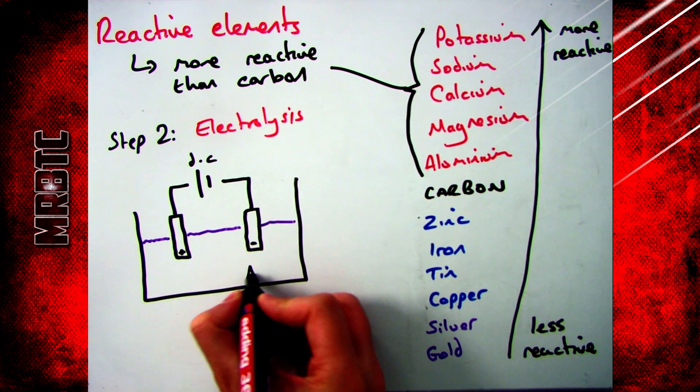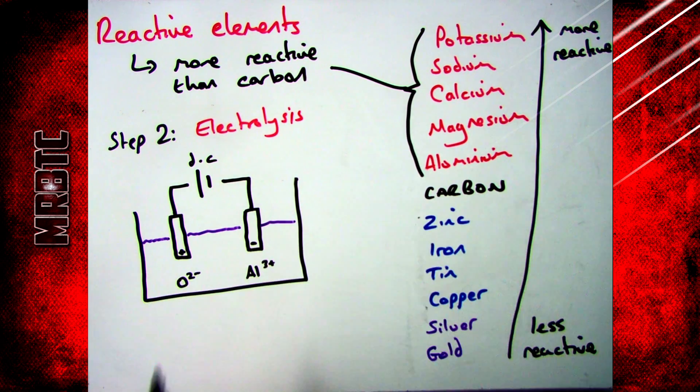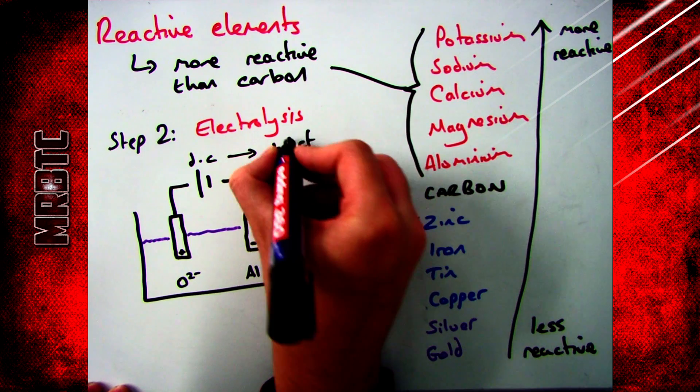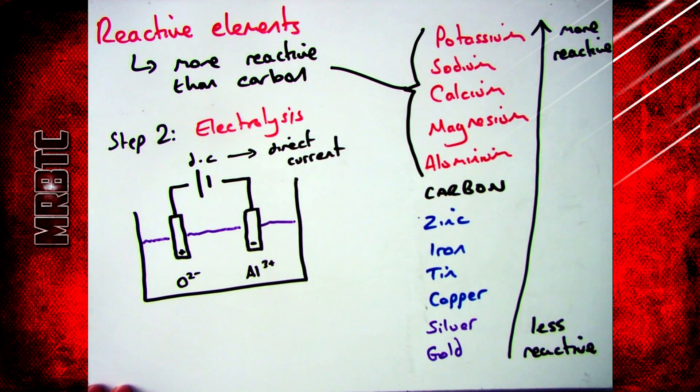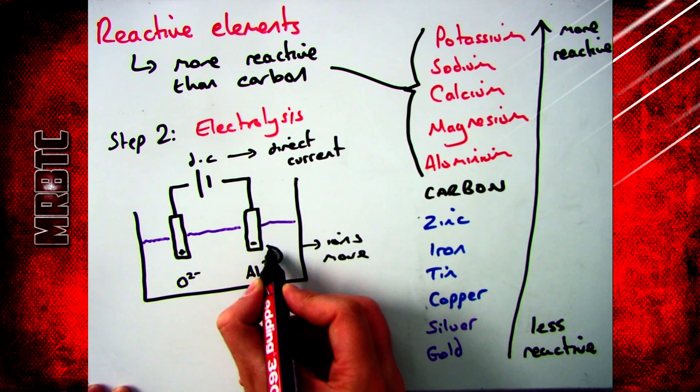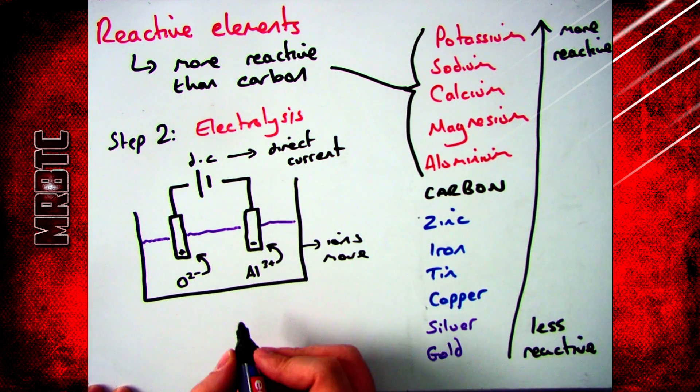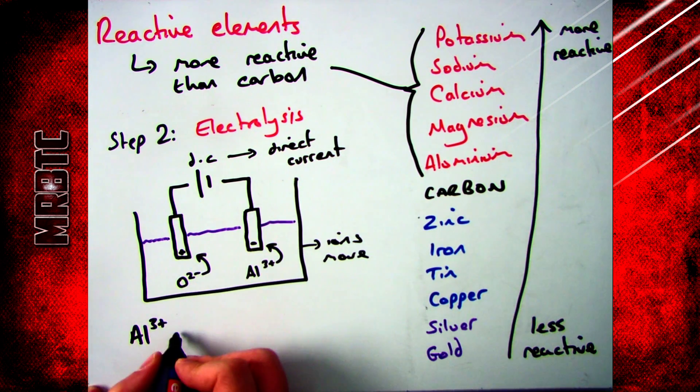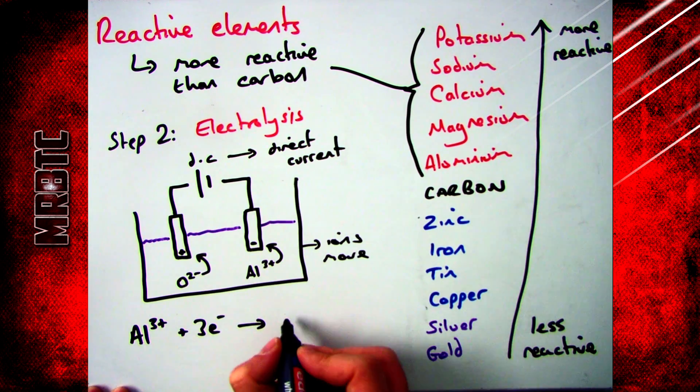To carry out the procedure, you get your aluminum oxide, you melt it, and you add it into your electrolysis equipment. You use a direct current to separate the two, and then what will happen is your aluminum ions will move to the opposite charge. The aluminum will go to the negative electrode, and the oxygen will go to the positive electrode.